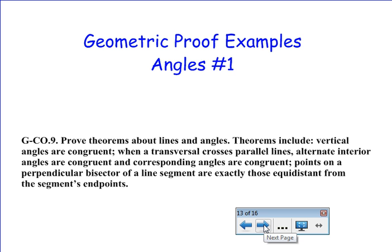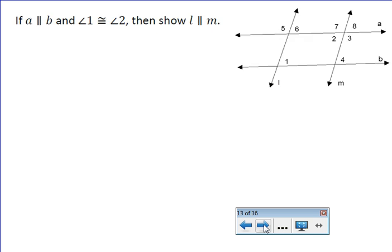I have included the Common Core Standard on there that tells us why it's so important to look at lines and angles and to prove theorems about those. So, we start by giving our conditional statement. If line A is parallel to line B and angle 1 is congruent to angle 2, then show line L is parallel to line M.